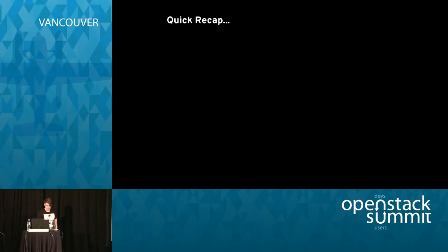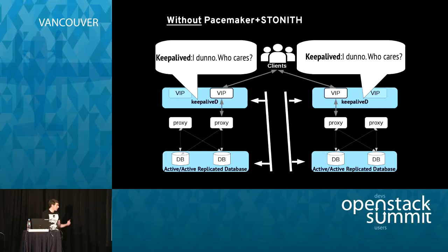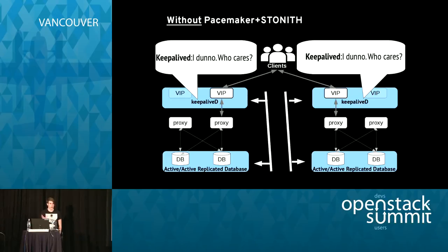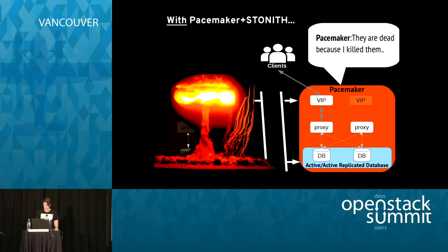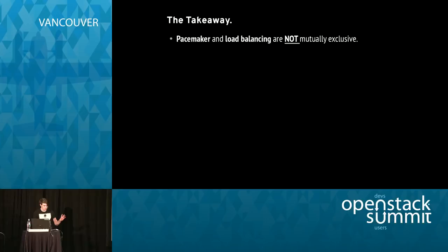A quick recap: without Pacemaker and Stonith, we potentially have split partition issues and no centralized way of recovering resources. It's possible to handle split partitions with KeepaliveD, but it's not native and it's very difficult — you have to work really hard to do what Pacemaker natively does in sophisticated, simple ways. With Pacemaker and Stonith, we don't worry about split partitions and we get centralized management of all resources. The takeaway: Pacemaker and load balancing are not mutually exclusive. Pacemaker handles resource management; the load balancer handles traffic distribution.